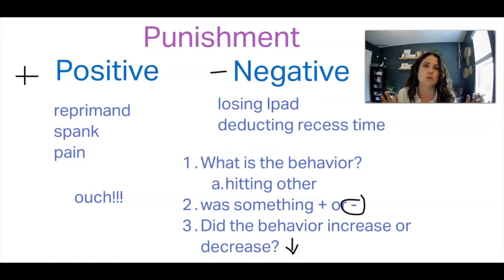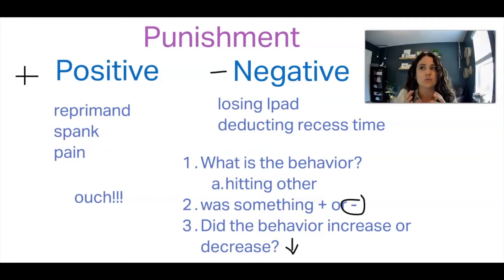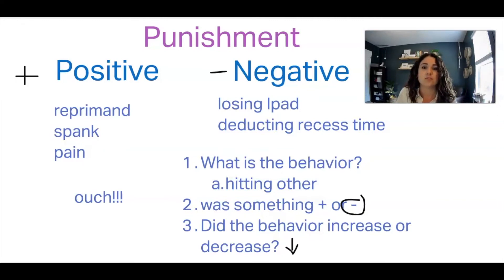Now let's talk about how negative or positive punishment scenarios turn into avoidance behavior. Maybe it only happens once — you've heard the saying 'it happened once and you'll never do it again.' When we have a hand touching a hot stove, we're not going to do that again. Touching the hot stove decreases, and in the future we might grab an oven mitt. That is our avoidance behavior — we're avoiding getting burned again, so we engage in putting an oven mitt on, and that behavior is reinforced because we avoid that burn.